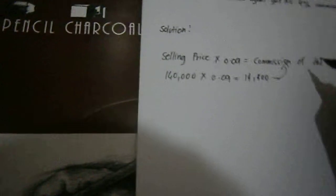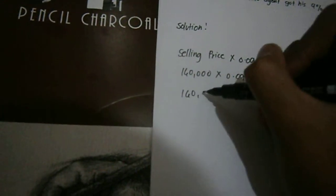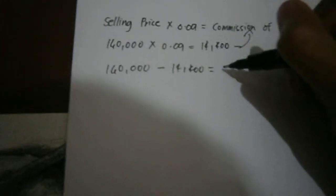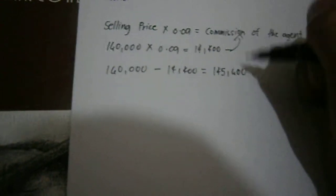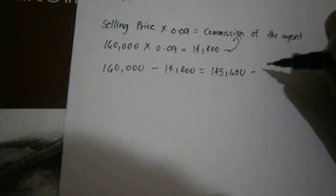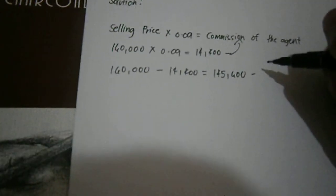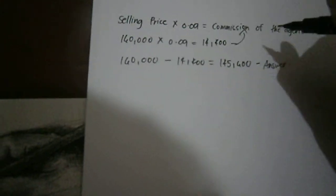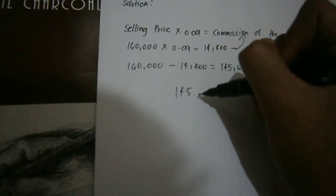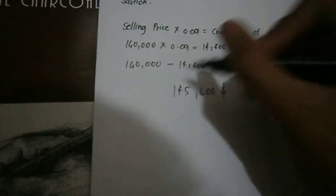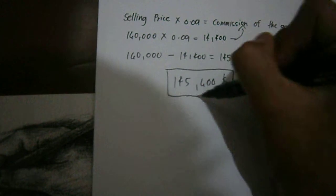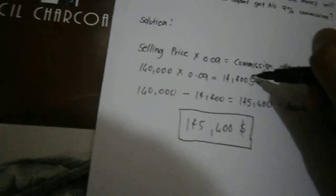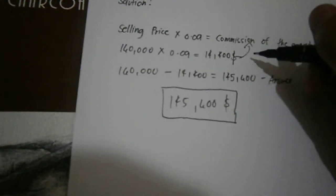After you get the commission of the agent, you subtract it from the selling price. $160,000 minus $14,400 equals $145,600, and that is the money Shob will earn after selling the house with the agent. So that's the answer: $145,600, and the commission is $14,400 to the agent.